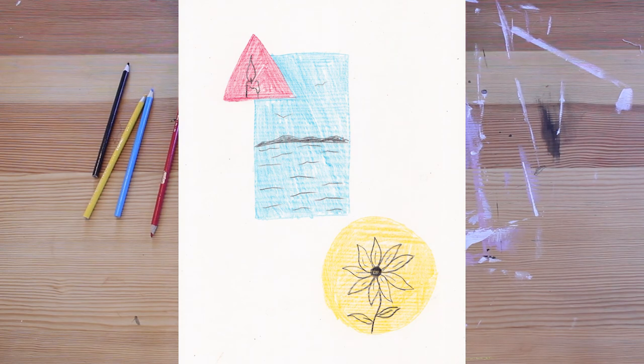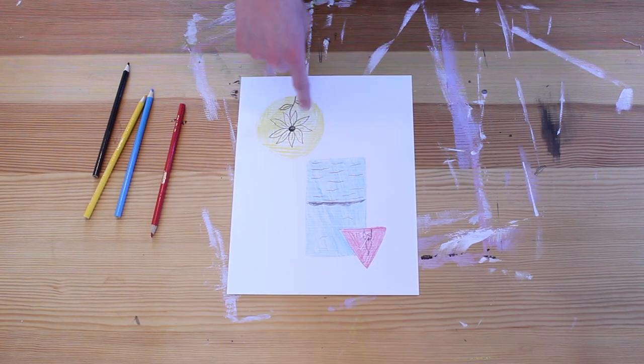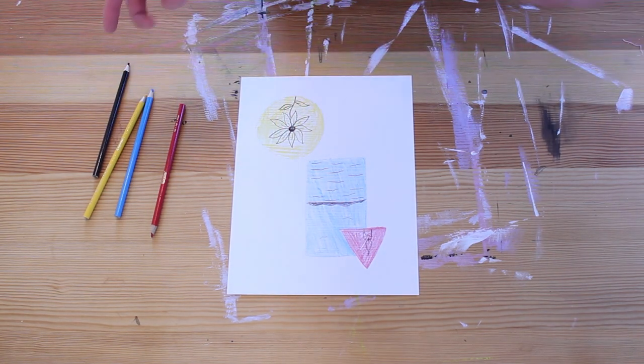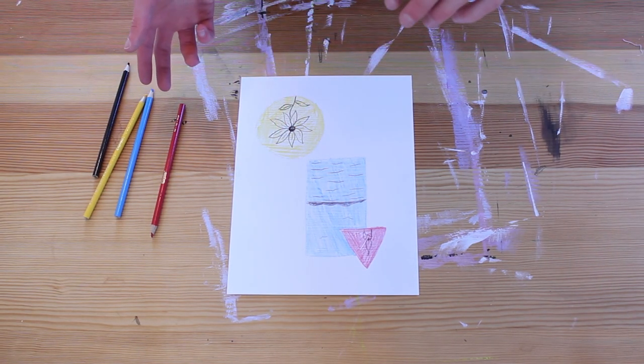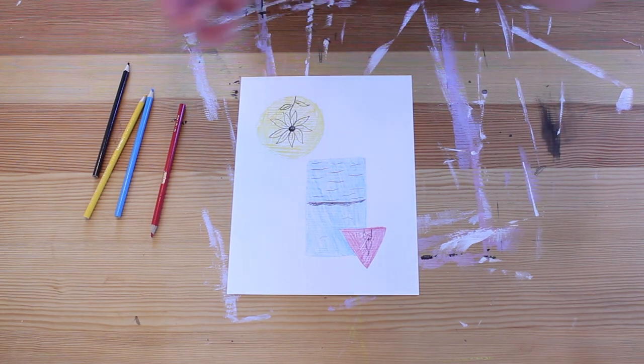So when you put the two side by side, you can really see how different organic and inorganic lines and shapes are. These feel a lot more rigid, they feel more solid, whereas these feel more fluid. They feel like they have a little bit of life to them.